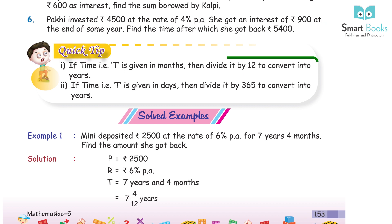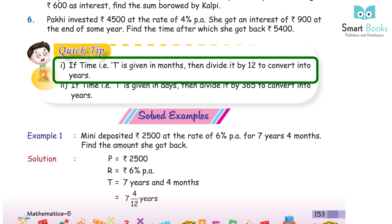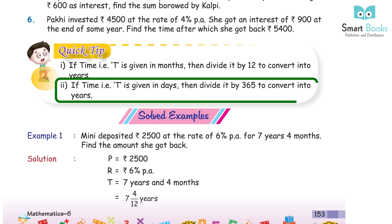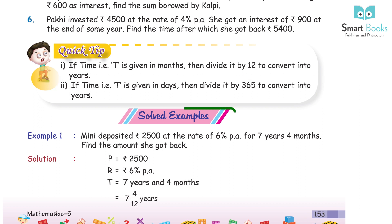Quick tip: Step 1 — if time T is given in months, divide by 12 to convert into years. Step 2 — if time T is given in days, divide by 365 to convert into years.